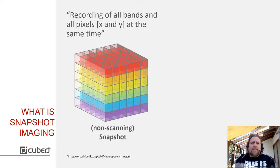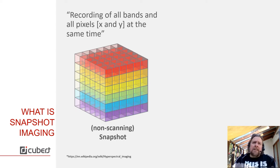But what is snapshot imaging? I think there's some confusion in the market at the moment. For us, it's pretty simple — and this is from the Wikipedia page: snapshot spectral imaging is the recording of all bands and all pixels at the same time.